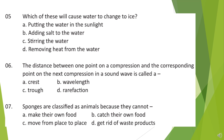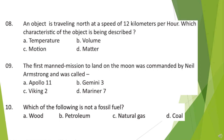Question 7. Sponges are classified as animals because they cannot? Look at the options and choose your answer. Question 8. An object is travelling north at the speed of 12 kilometers per hour. Which characteristic of the object is being described? Question 9. The first man-made mission to land on the moon was commanded by Neil Armstrong and was called... Look at the options and choose your answer.